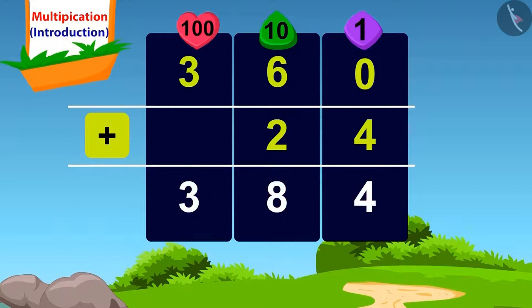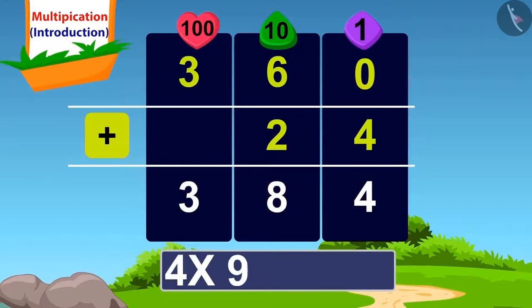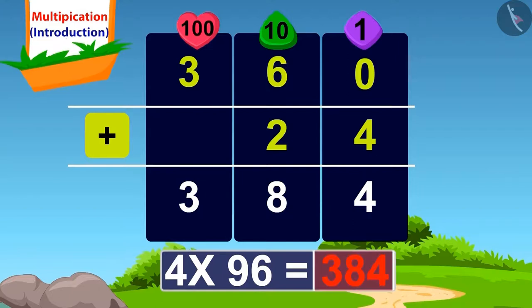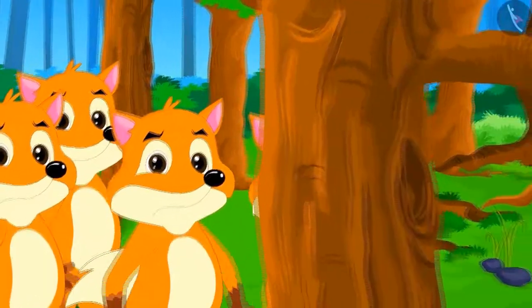Doing this, we got the answer to our question: 4 times 96 is 384. A total of 384 ants will be required. The next day the wolf came with three of his friends.